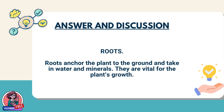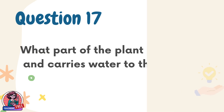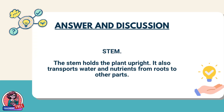Question 17. What part of the plant supports it and carries water to the leaves? Answer: Stem. The stem holds the plant upright. It also transports water and nutrients from roots to other parts.